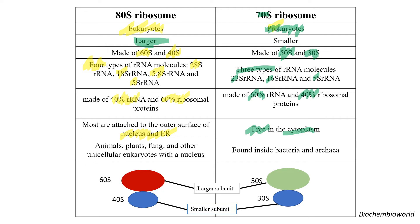In terms of which organisms have which ribosome: the 80S is found in eukaryotes — plants, animals, fungi, and other unicellular eukaryotes with a nucleus. The 70S ribosome is found in bacteria and archaea.